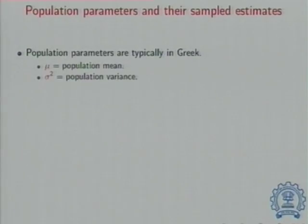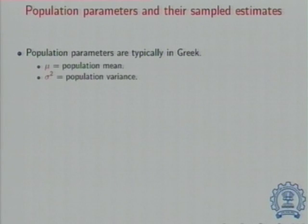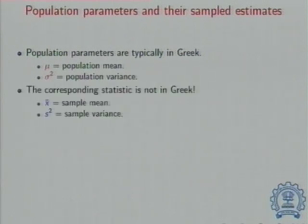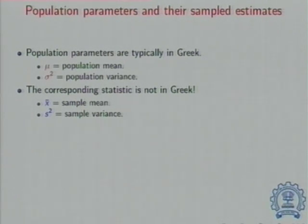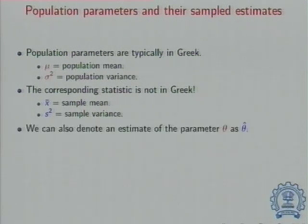If you look at notation, notation in statistics turns out to be important because you want to keep track of parameters that you really want to learn about — means and variances — but invariably we are working with samples. So where you want to learn about a μ, we instead find ourselves an x̄, and where you wanted to learn about the σ² you learn about an S² and so on.